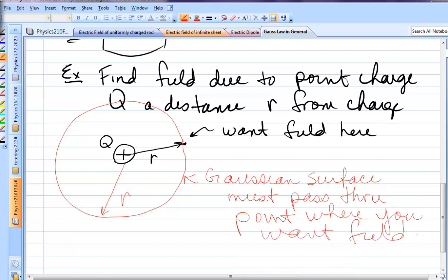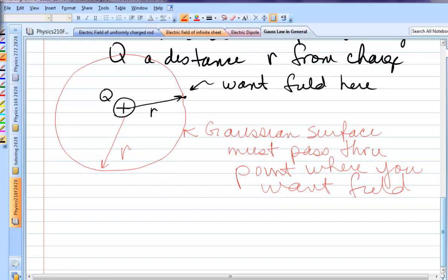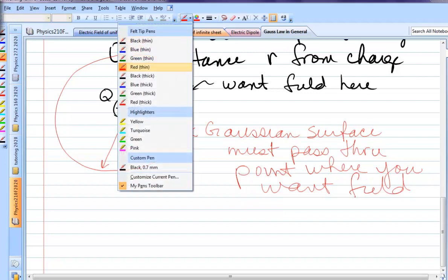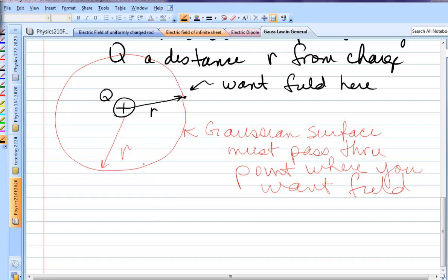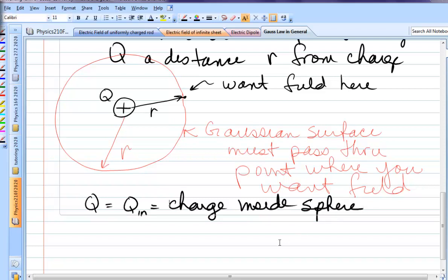Always want the field. That's step two, the Gaussian surface. Step three is to figure out how much charge is inside this sphere. Well, you just look at the sphere. And obviously, all the charge that's inside is Q. So, Q equals Q_in, which is the charge inside the sphere. That seems pretty basic and simple here, but there are cases where we may be drawing Gaussian surfaces inside of giant balls of charge. In which case, it's a different amount of charge inside our Gaussian surface, not necessarily all the charge.